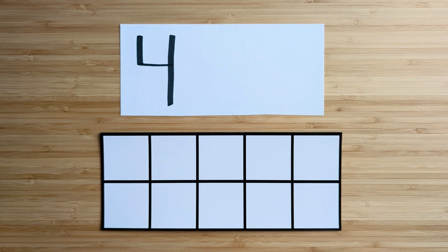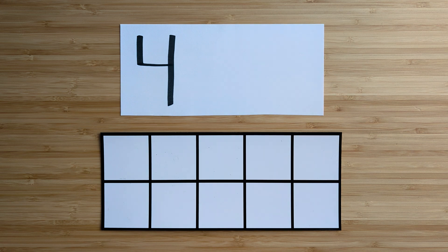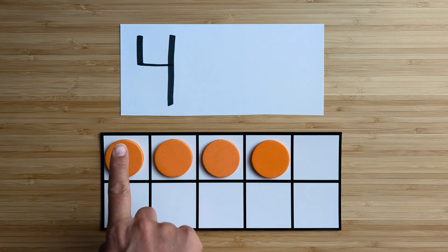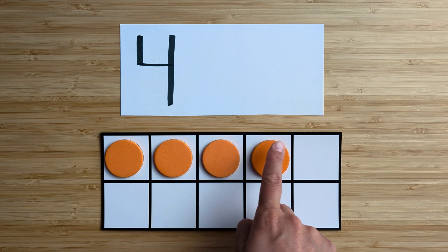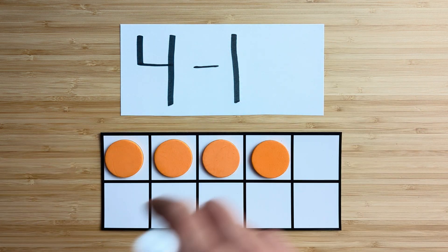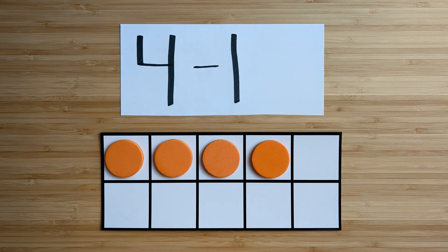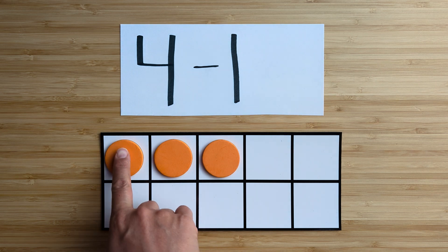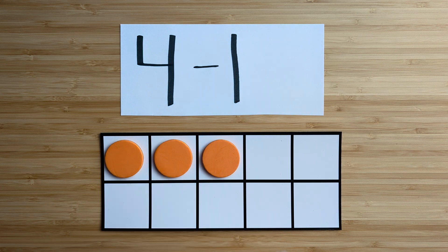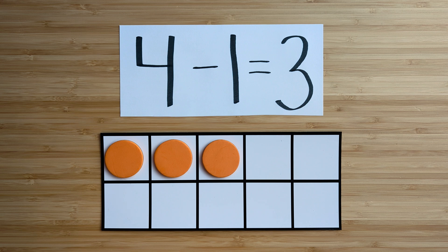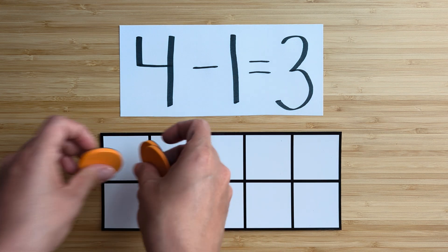Clear off your board. Let's try the next one. Make the number four. Point and count: one, two, three, four. What's one less than four? Point and count: one, two, three. Three is one less than four. Nice job.